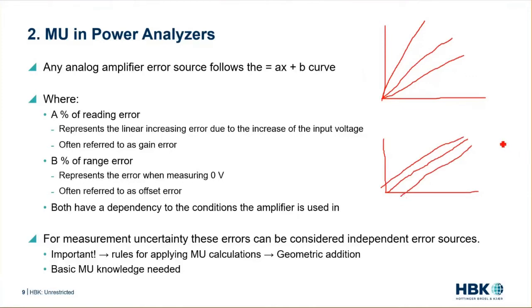Both of those errors have a dependency on the conditions the amplifier is used in. This one is related to the reading you're making with your amplifier. This one is relevant to the range your amplifier is in. For each range, the percentage is probably the same, but the value in the end, as it's a percentage of your range, becomes bigger in the bigger range you go with your measurement amplifier.